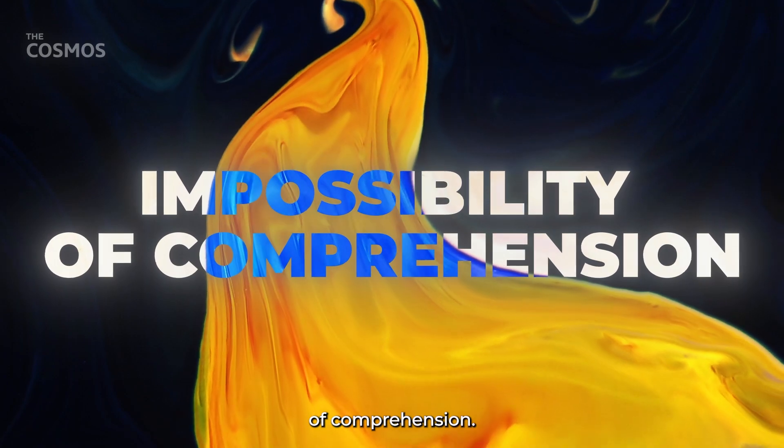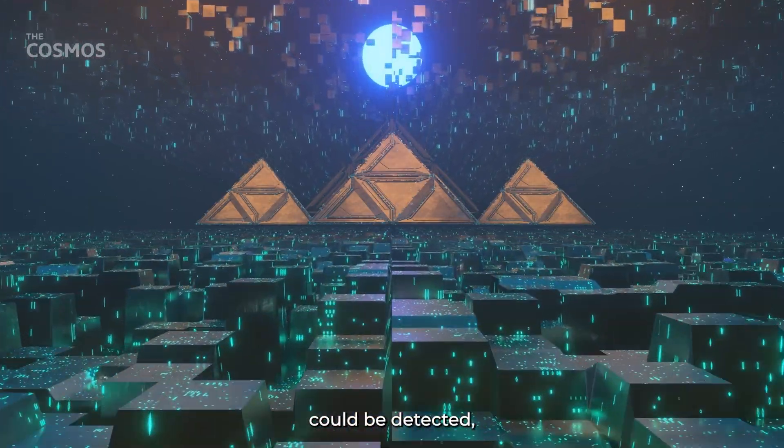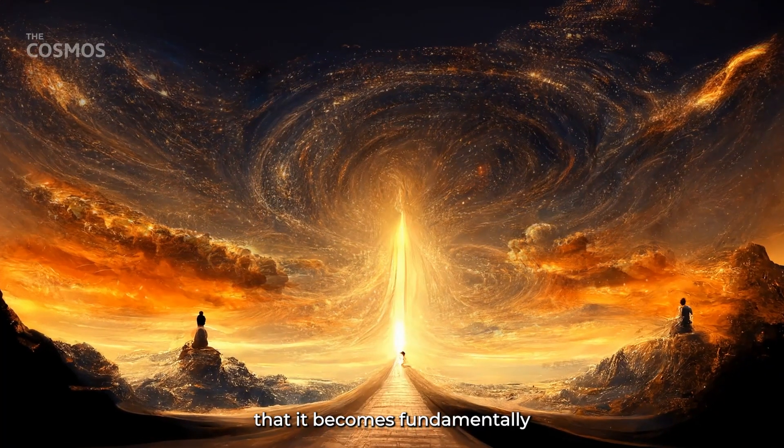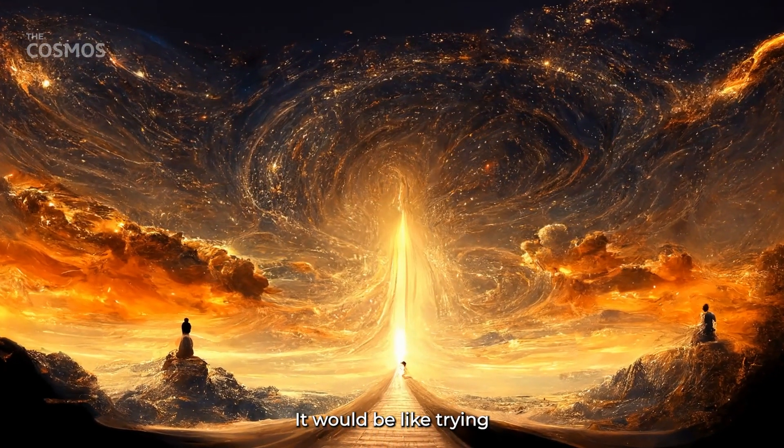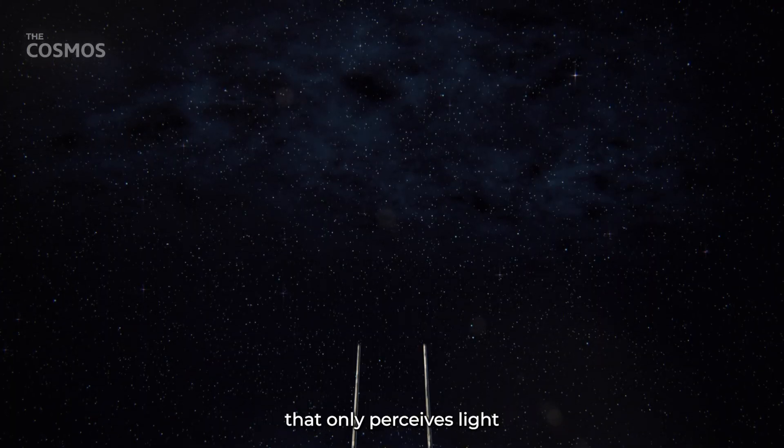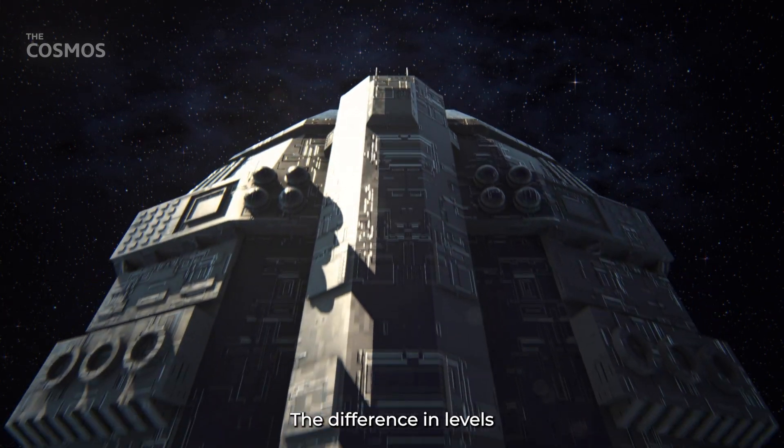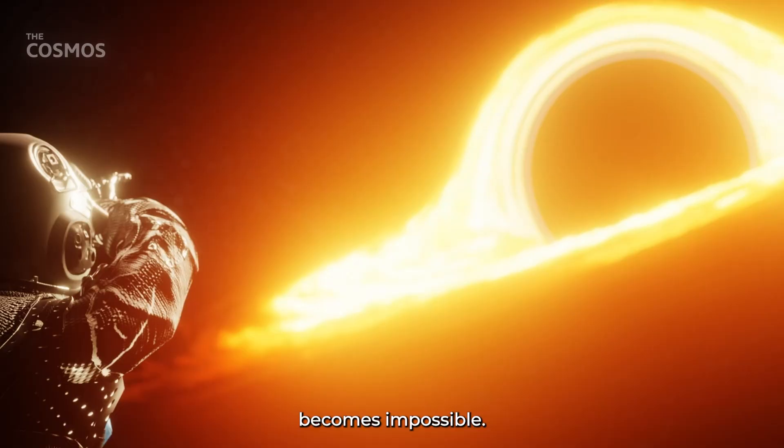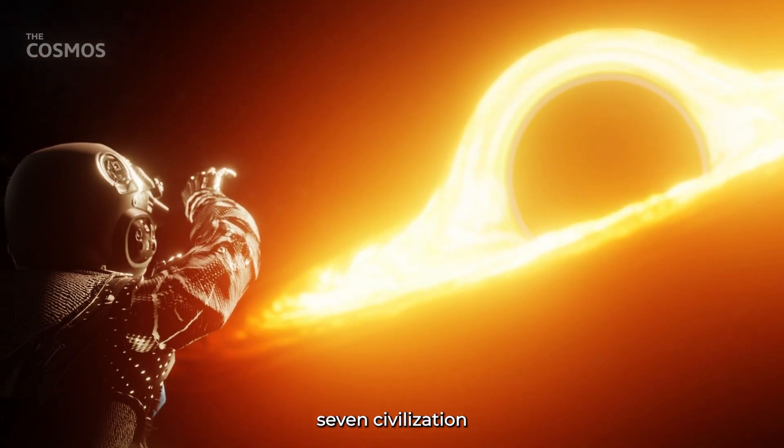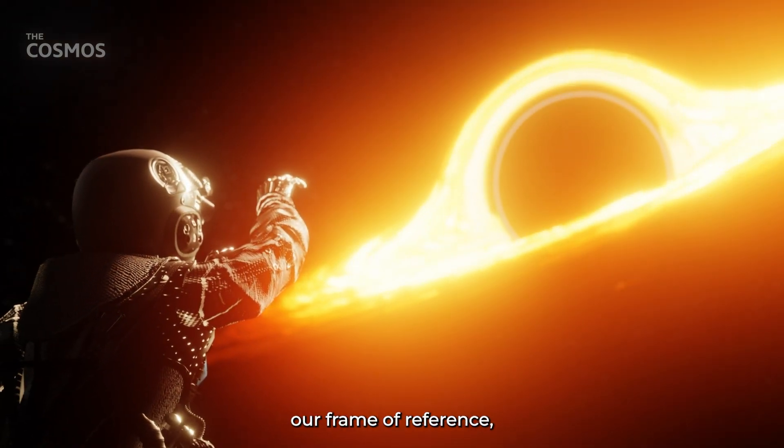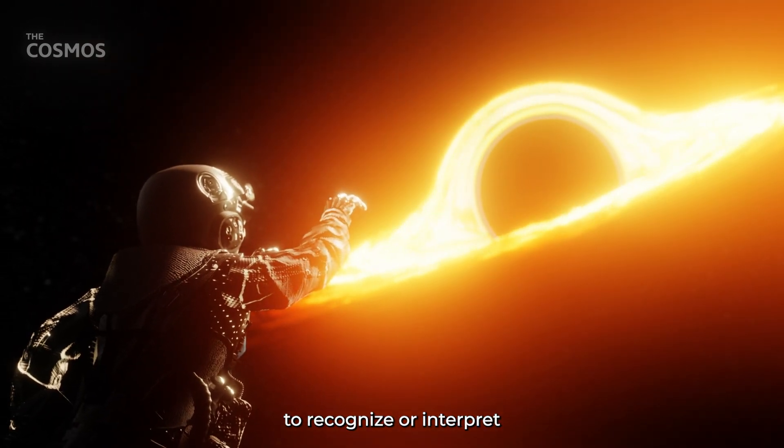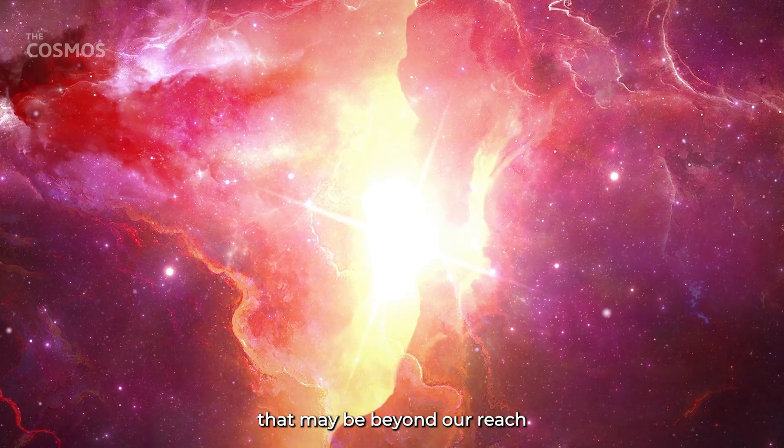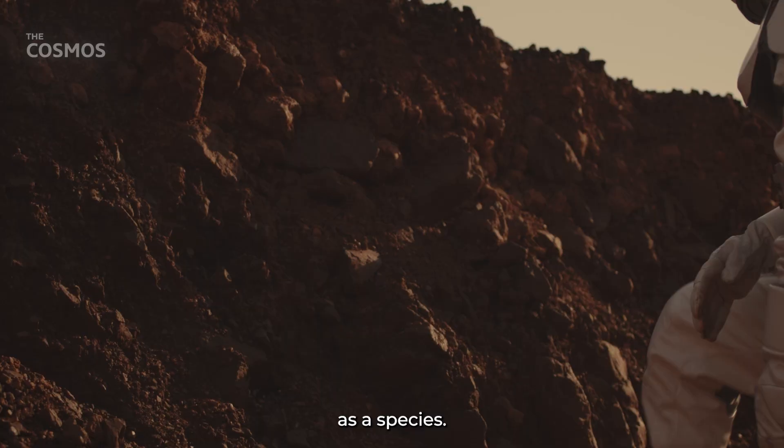Impossibility of Comprehension. Even supposing that evidence of a Type 7 civilization could be detected, the scale and nature of such an entity might be so far beyond our capabilities that it becomes fundamentally incomprehensible to us. It would be like trying to explain the complexities of a computer to an organism that only perceives light and darkness. The difference in levels of understanding and awareness is so vast that meaningful communication or understanding becomes impossible. The forms, symbols, structures, or behaviors that a Type 7 civilization might exhibit could be entirely outside our frame of reference, rendering us unable to recognize or interpret what we are observing. The challenge is not merely technological, but conceptual, requiring a leap in understanding that may be beyond our reach as a species.